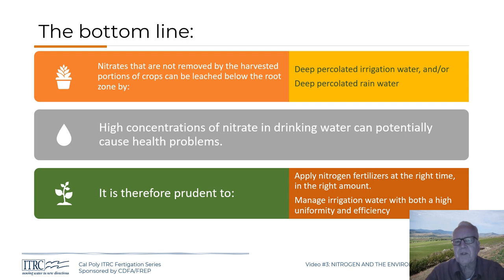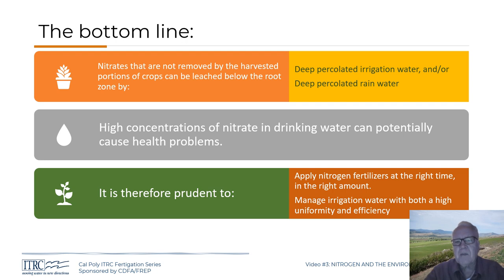Nitrogen management is also tied to irrigation water management. We have two key concepts: uniformity and efficiency. Uniformity deals with how evenly irrigation water is distributed to different plants throughout a field — it doesn't say whether you have the right amount, too much, or too little. Efficiency basically asks: if you put on one acre-foot of water, what percentage was actually used by the plants? These are quite different concepts.